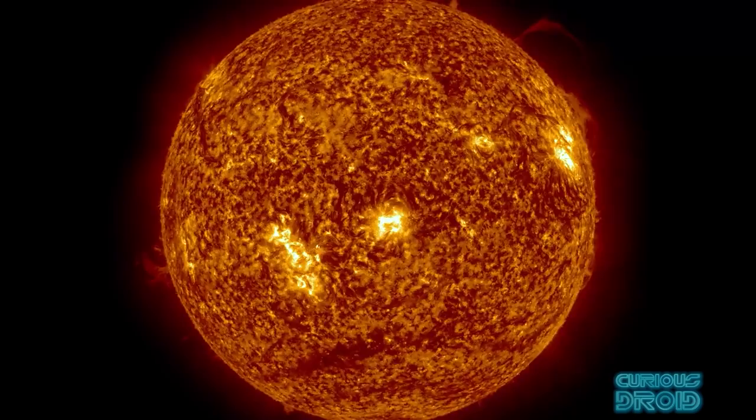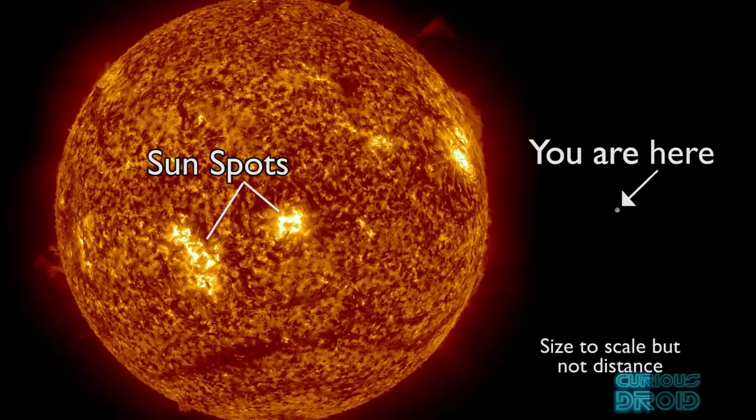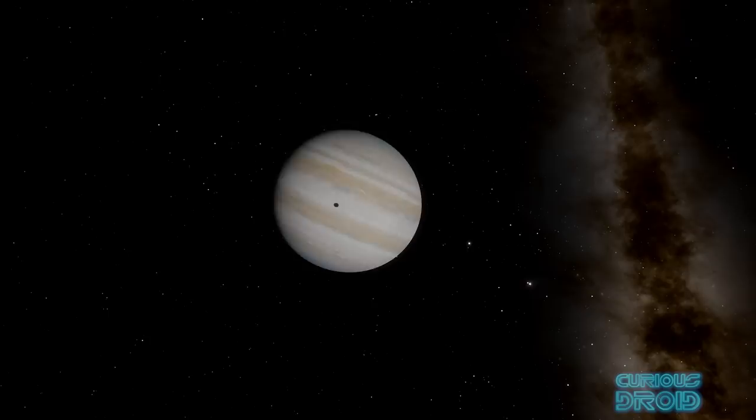Its diameter is 1.3 million kilometers or 1.39 times 10 to 9 meters. An average sun spot which appears like a dot on its surface could easily swallow the earth with room to spare and you could fit a million earths inside the sun's interior.